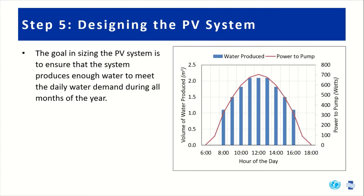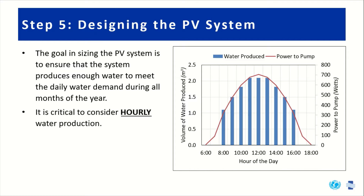The chart on the right shows the volume of water produced in blue bars and the pump power in that red line on the y-axis, showing how that changes throughout the day. Since water produced and power to the pump is based on solar energy, as the sun rises, peaks, and sets, we get changing solar irradiance. Therefore it is critical to consider hourly water production — not just average flow rate, but what the flow rate will be at each hour of the day.